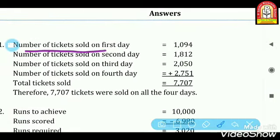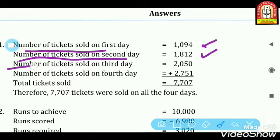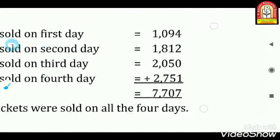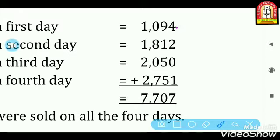Number of tickets sold on the first day is equal to 1,094. Number of tickets sold on the second day is equal to 1,812. Number of tickets sold on the third day is equal to 2,050. Number of tickets sold on the fourth day is equal to 2,751. Total tickets sold is the sum of all four days.